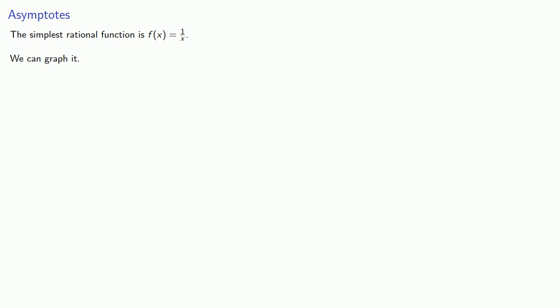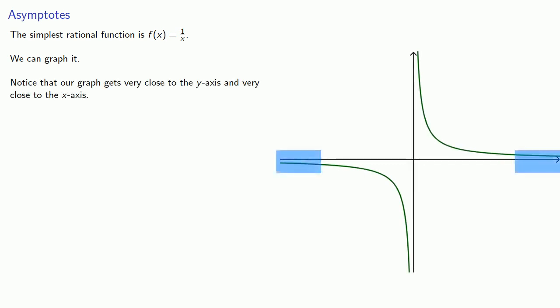We plot many points and get something that looks like this. Notice our graph gets very close to the y-axis and very close to the x-axis. We say that the x and y axes are asymptotes, and y = 0 is a horizontal asymptote.